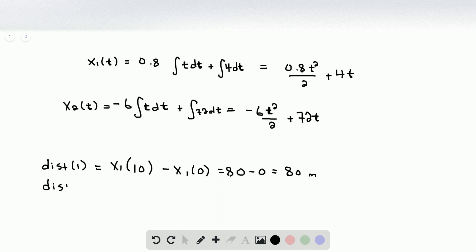The distance along the second path is equal to x2 of 12. In this case, I'm using the rightmost point of the second path. And then the leftmost point of the second path is at 10. So I have that. Plugging these two values into this for t and simplifying gives 432 minus 420, which is equal to 12 meters. So the total distance is equal to the sum of the two, which is 92 meters.